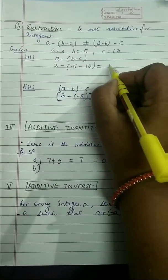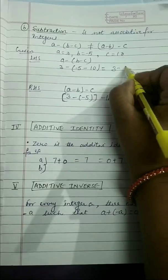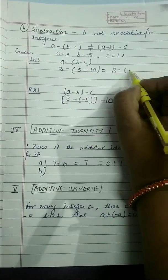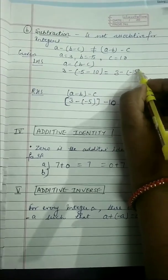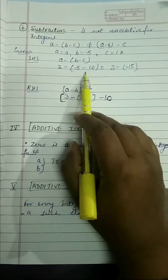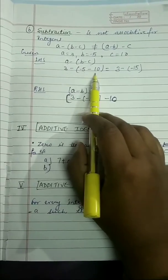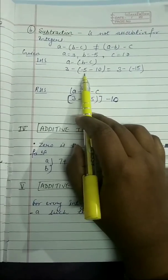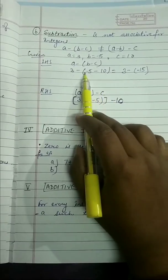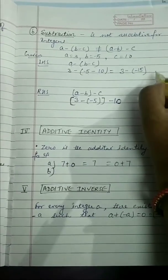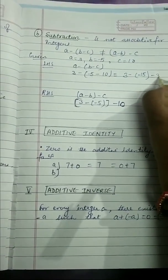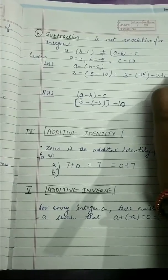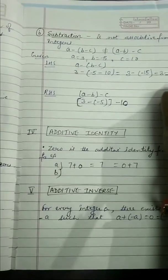Value of B is minus 5 and C is 10. Now solving this: 3 minus (minus 5 minus 10). Minus 5 minus 10 equals minus 15. Both have the same sign so we add: 3 minus minus 15 equals 3 plus 15, which equals 18.